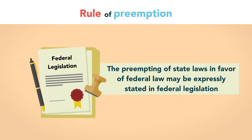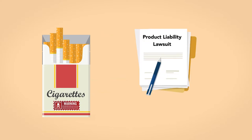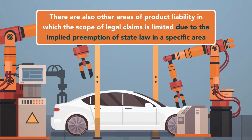The preempting of state laws in favor of federal law may be expressly stated in federal legislation. For example, the federal statute requiring labels on cigarette packages warning of the dangers of smoking also explicitly states that no other form of warning, aside from what is federally mandated, is required. As a result, product liability cases based on the failure of manufacturers to provide adequate warnings regarding the risks of cigarette smoking are preempted by the federal standards. There are also other areas of product liability in which the scope of legal claims is limited due to the implied preemption of state law in a specific area.